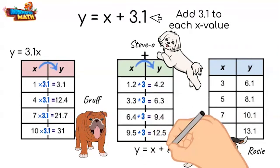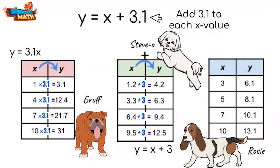Does Rosie's table work for the rule given? Absolutely! Adding 3.1 to each x-value determines the corresponding y-value. Rosie is our winner.